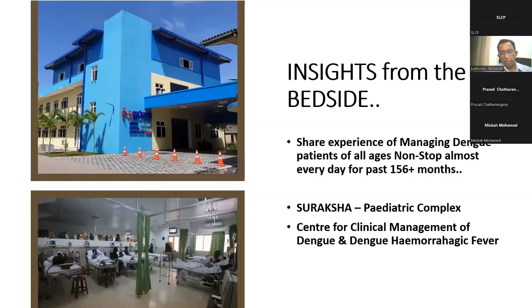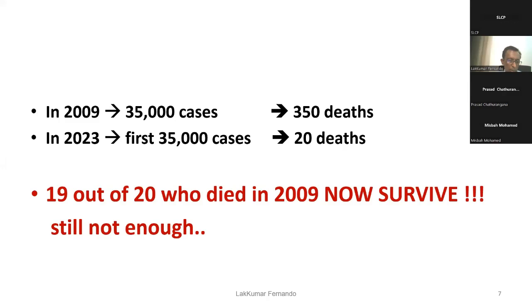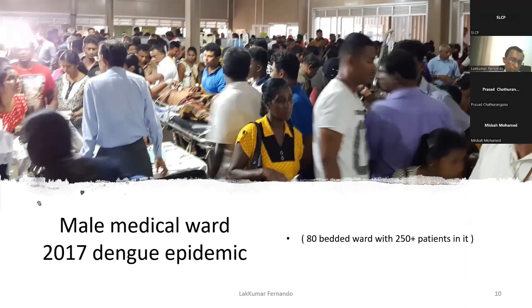In the 2009 epidemic, there were 35,000 cases and 350 deaths; this year, for the first 35,000 cases, there were only 20 deaths — meaning 19 out of 20 patients who died in 2009 now survive. We have come a long way, but this is still not enough. We are possibly heading for another dengue epidemic, which is why this discussion is important.